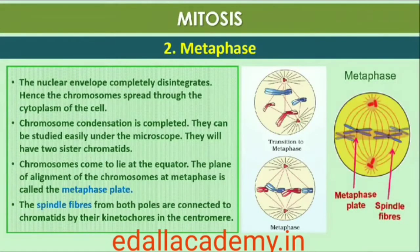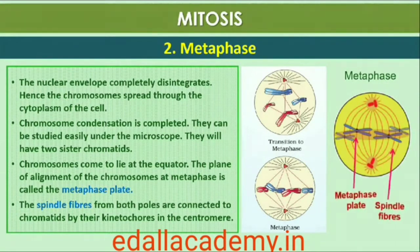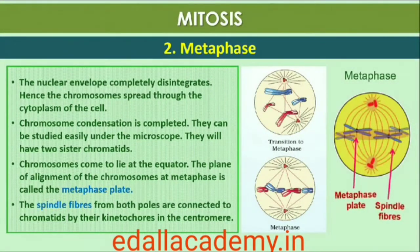The complete disintegration of the nuclear envelope marks the start of the second phase of mitosis, Metaphase; hence the chromosomes are spread through the cytoplasm of the cell. By this stage, condensation of chromosomes is completed and they can be observed clearly under the microscope. This is the stage at which morphology of chromosomes is most easily studied. At this stage, the metaphase chromosome is made up of two sister chromatids, which are held together by the centromere.